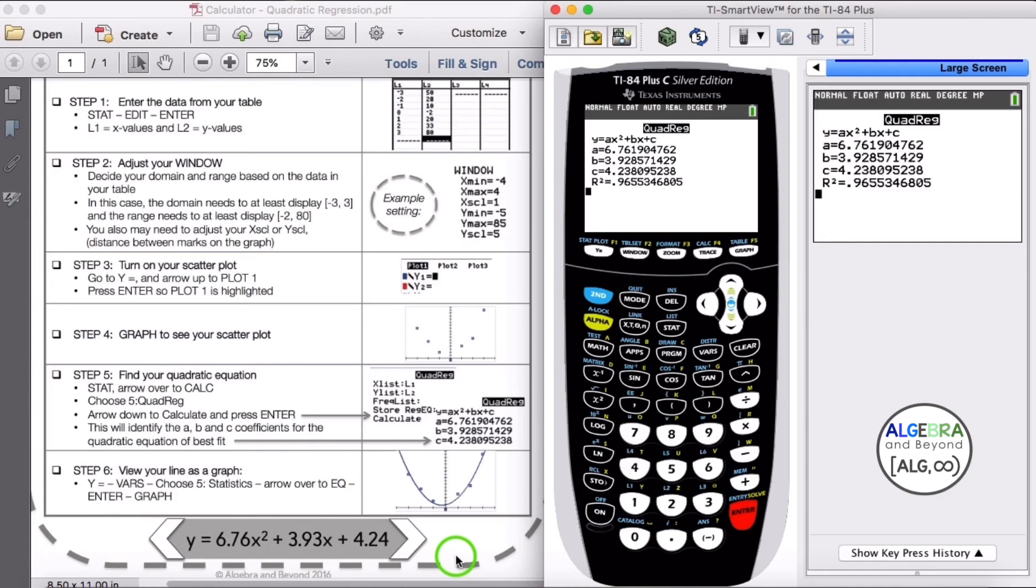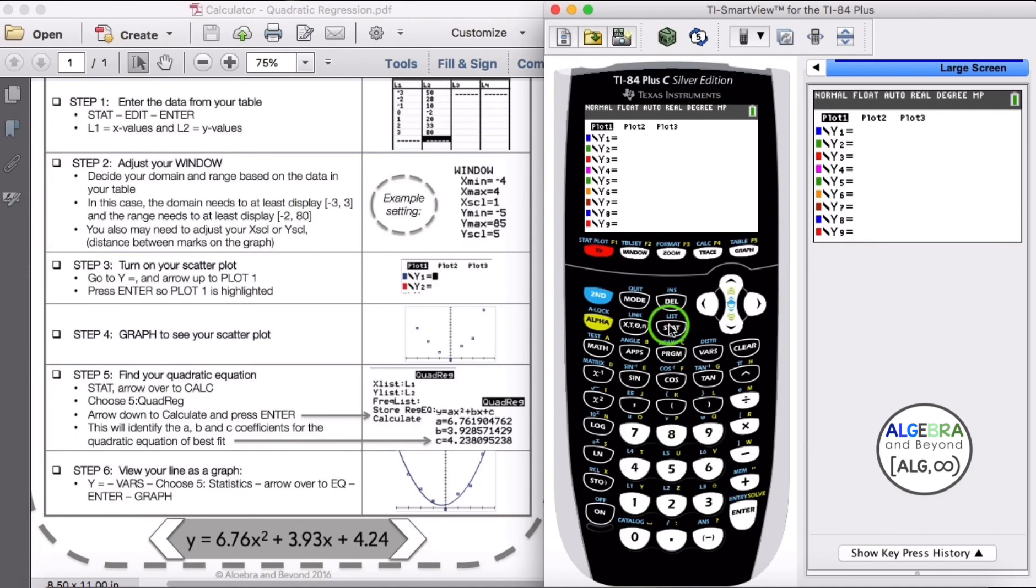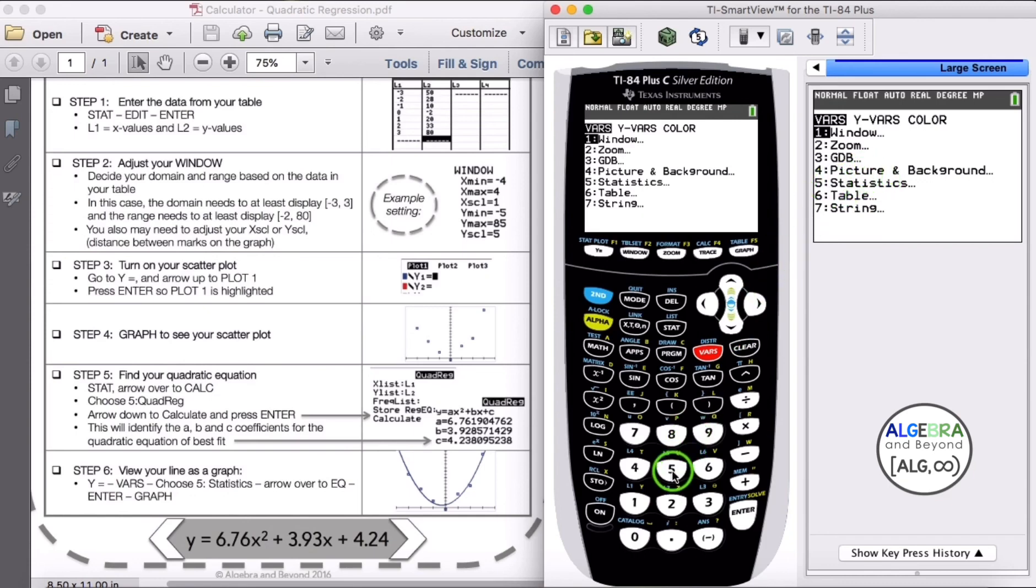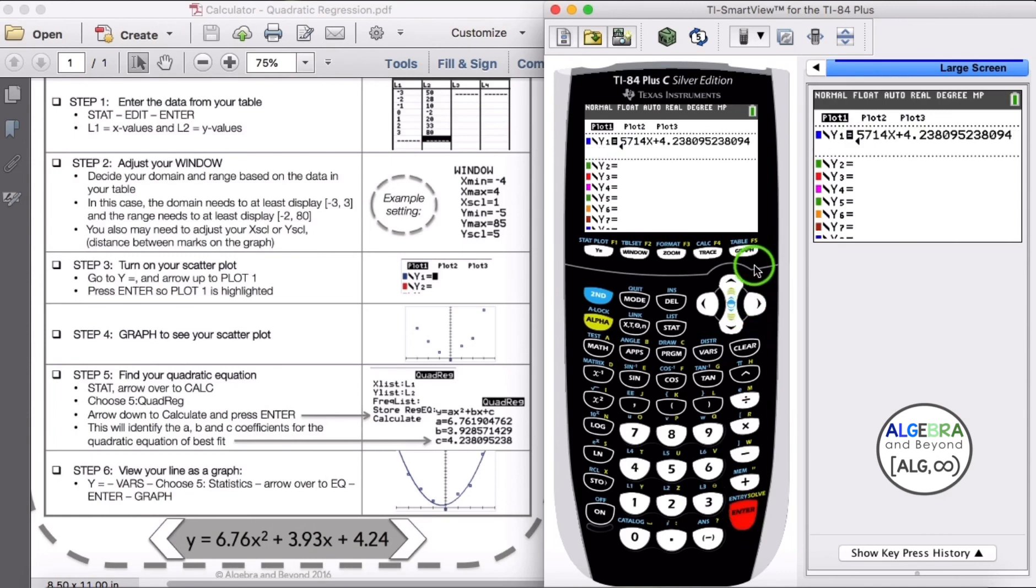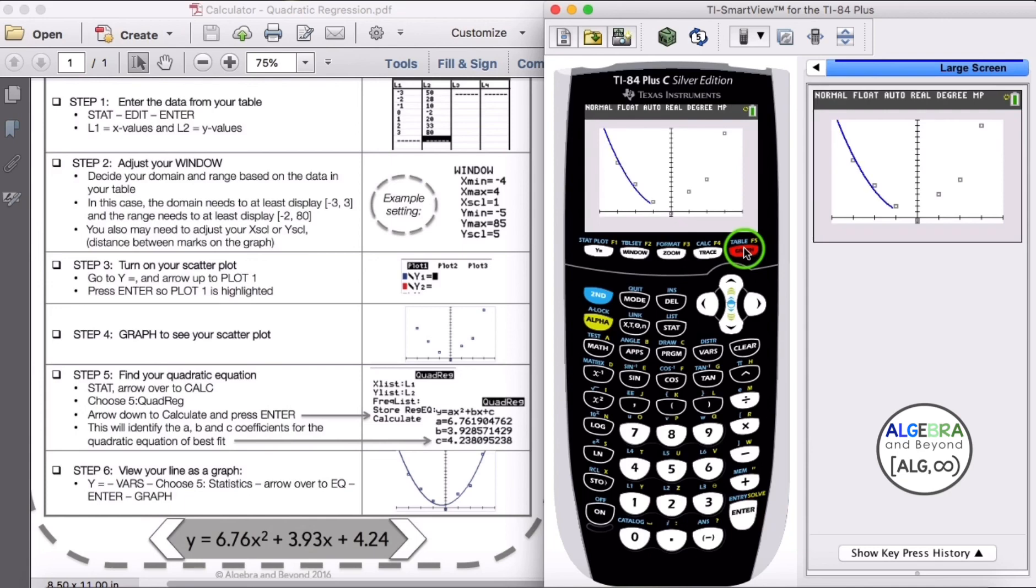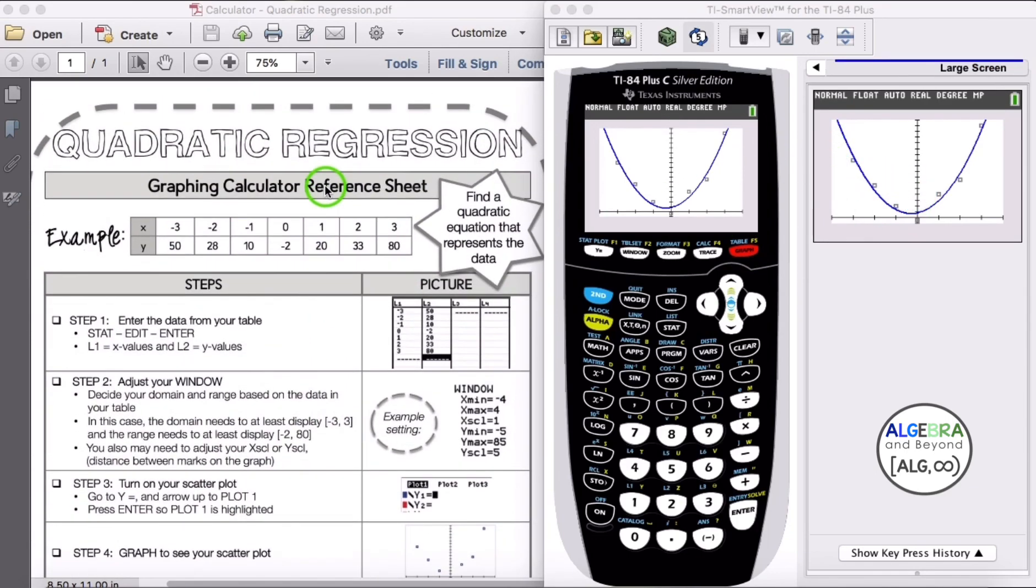So now we have our quadratic equation, and we want to go to step 6 and view our graph. We're going to go to Y equals, and in Y1, we want to choose VARS, then choose number 5, statistics, and then arrow over to EQ. We're going to choose our regression equation, so I'm going to click enter, and it enters our regression equation there. You could have typed it in if you wanted it to round to two decimal places, but this gives it more exact. Then we'll choose graph to see it graphed. And there you can see our parabola, and that is how you do quadratic regression with the TI-84.